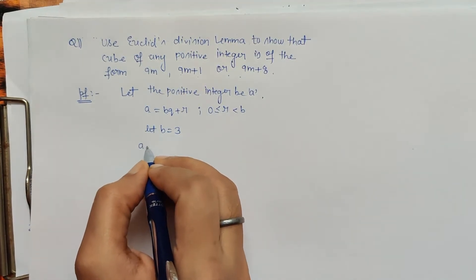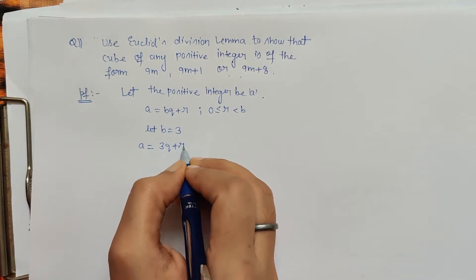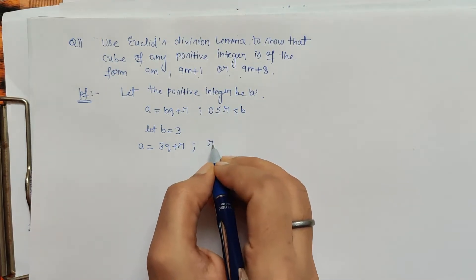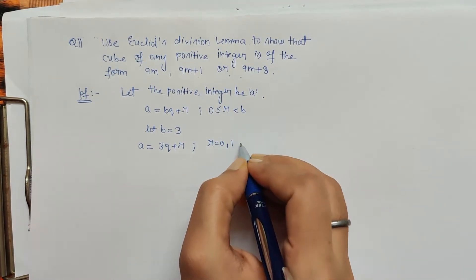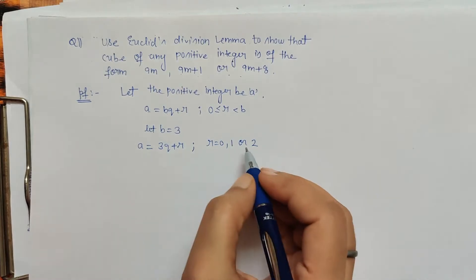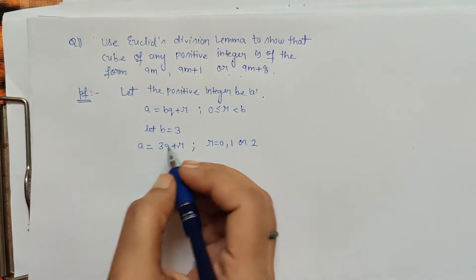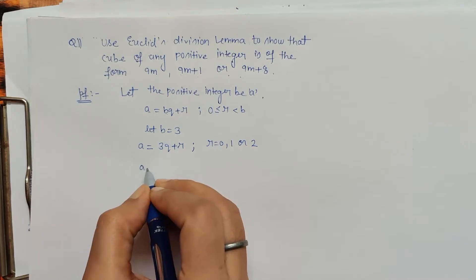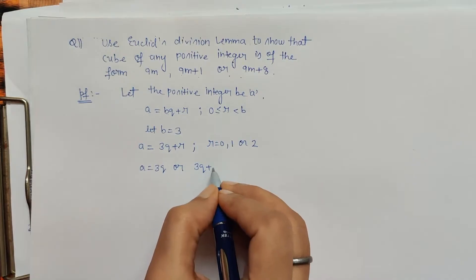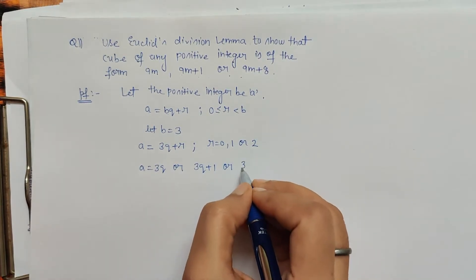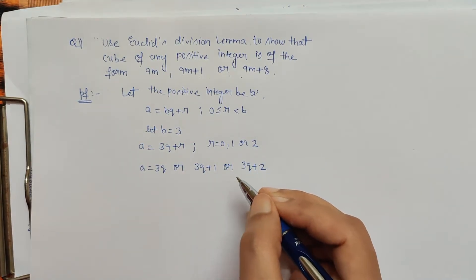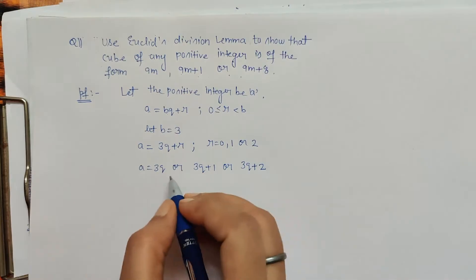After substituting B equals 3, we get A equals 3Q plus R. With respect to 3, the possible values for R are 0, 1, or 2, because R is less than B which is 3. So putting the values, A will be either 3Q, or 3Q plus 1, or 3Q plus 2 — exactly the same as the previous problem.